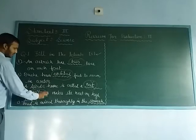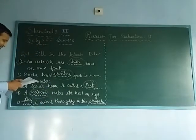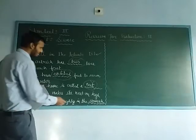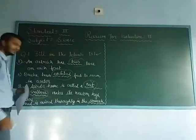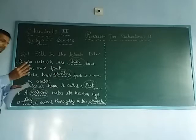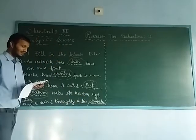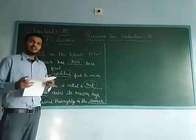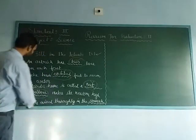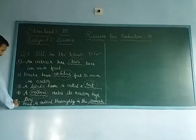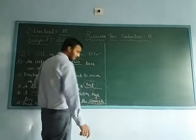Fourth number: a vulture makes its nest on high trees. Note the spelling — nest is N-E-S-T, not N-E-A-D. Answer is vulture makes its nest on high trees. Fifth number: food is curled and mixed in the inner stomach.